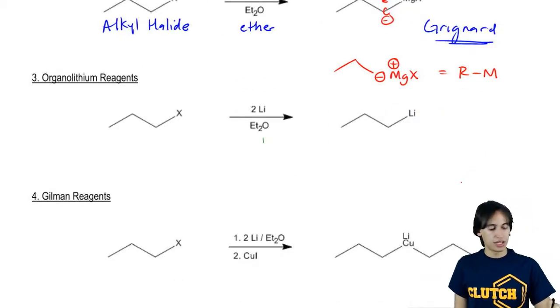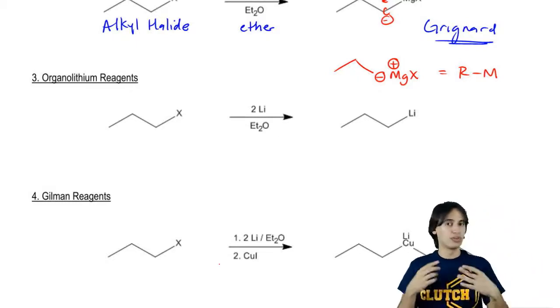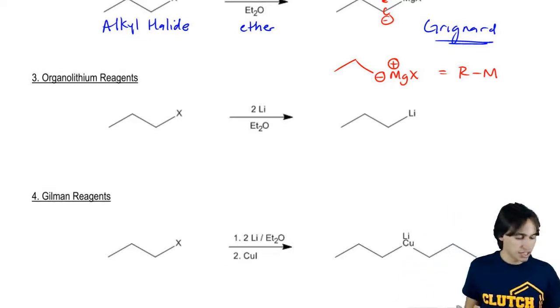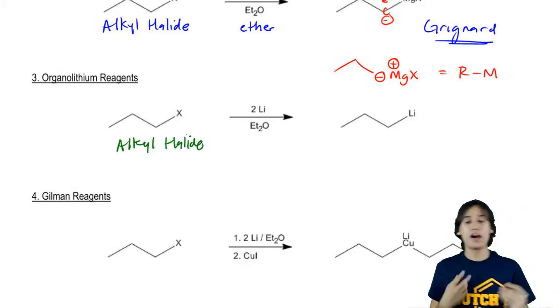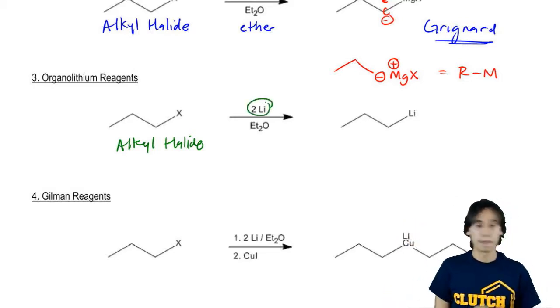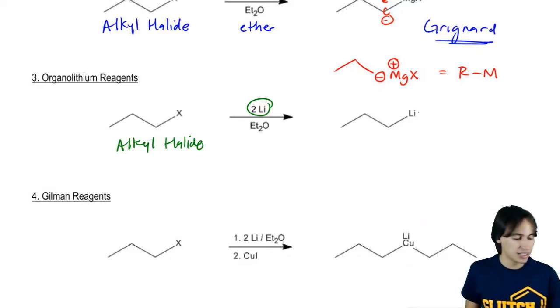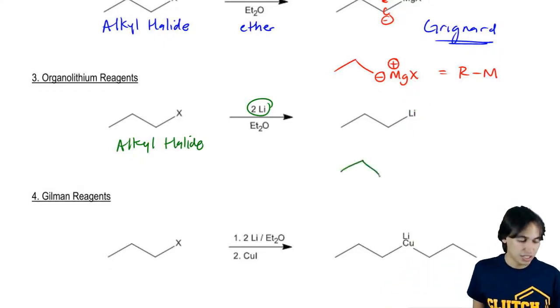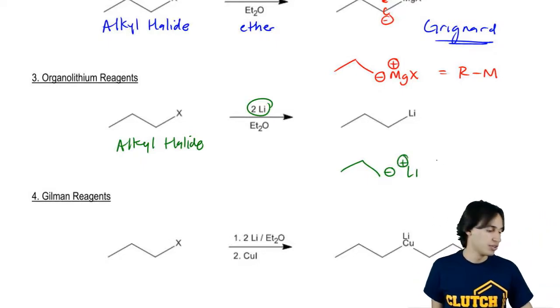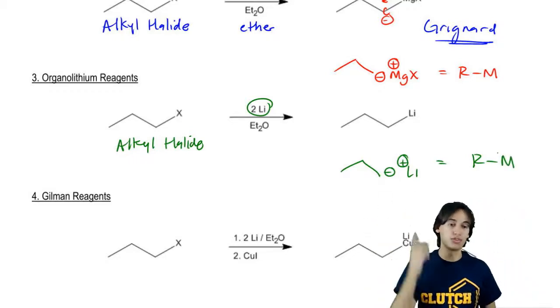So organolithium. My organolithium compound is going to be super similar to my Grignard reagent. I'm just going to use slightly different reagents. I'm going to start off with an alkyl halide again. No difference there. And now I'm going to react it with two equivalents of elemental lithium instead of magnesium and ether. What winds up happening is that now I just get my lithium directly attached to my carbon. That's it. There's no X on the other side. This can be written the other way, which would be ionic.